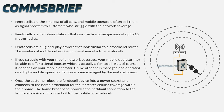Femto cells are the smallest of all cells and mobile operators often sell them as signal boosters to customers who struggle with network coverage. Femto cells are mini base stations that can create a coverage area of up to 10 meters radius. They are plug and play devices that look similar to a broadband router.